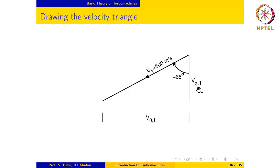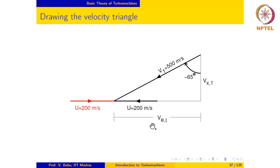Since it is an axial machine, the axial direction is our reference direction. This gives us the axial component and the tangential component of the absolute velocity at the inlet. The blade speed is 200 meters per second, so it is possible to draw the blade velocity vector in two orientations — one shown in red and the other in black — and we need to decide which is appropriate for the problem.